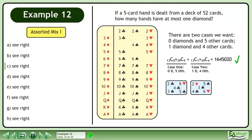Add the two cases to get 1,645,020 possible hands.